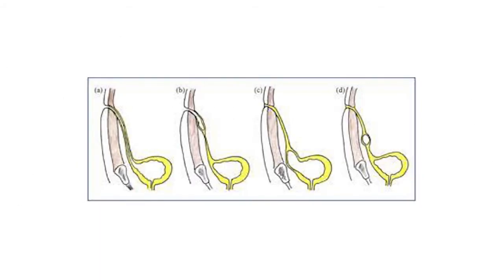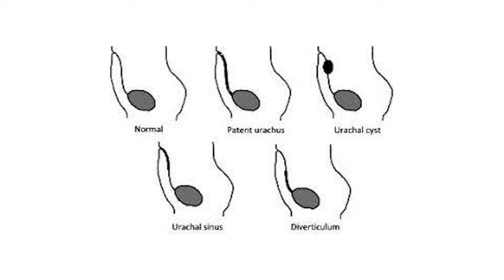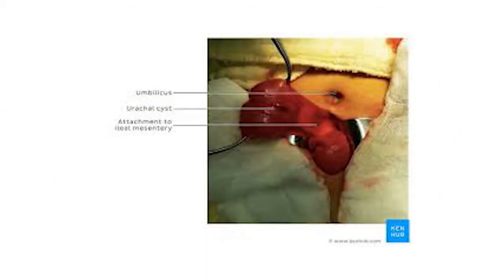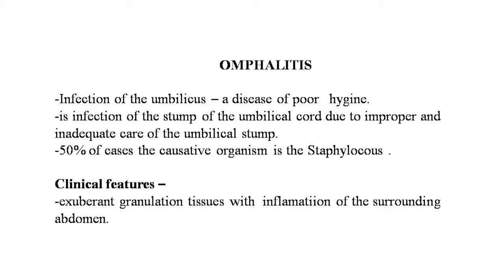Images on screen show: (A) the urachal cord, (B) the sinus, (C) the urachal fistula, and (D) the urachal cyst. Another image shows the vitello-intestinal sinus, urachal sinus, urachal cyst, and diverticulum. A typical urachal cyst is also visible on screen.